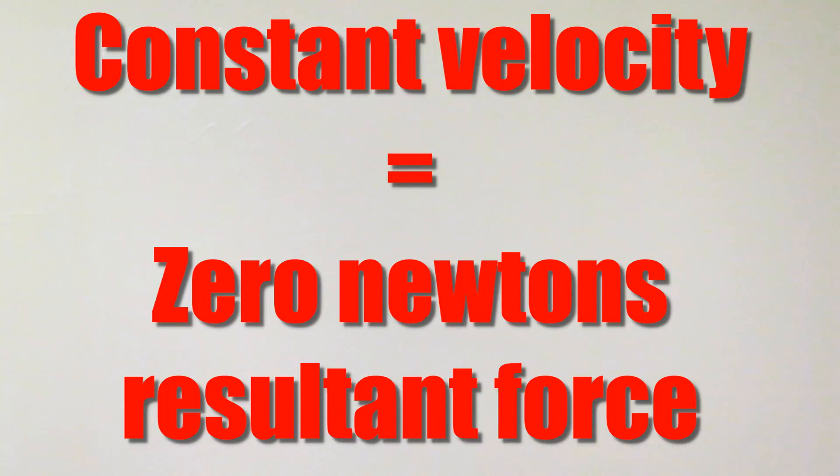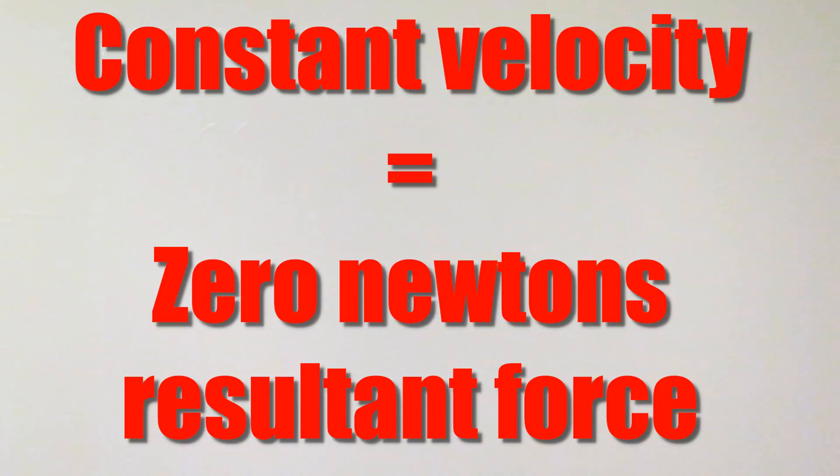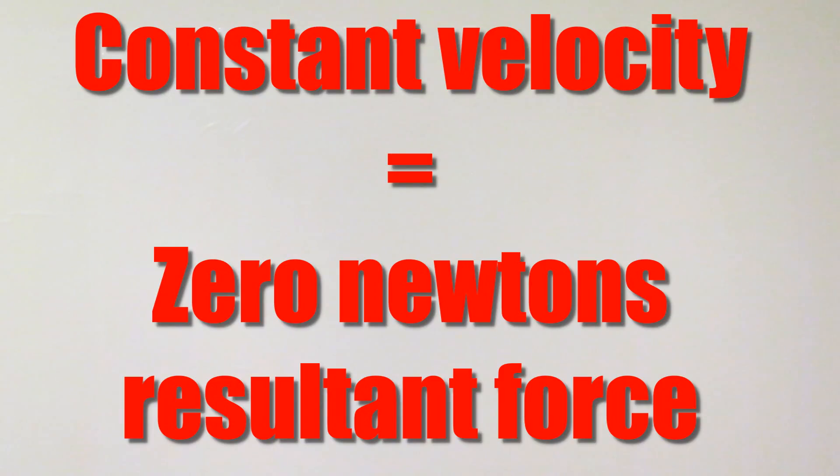Now this might be an object which is stationary or it might be an object which is traveling at a thousand miles an hour. It doesn't make a difference. If that object has a constant velocity, if it's not speeding up and it's not slowing down and it's not changing direction, then overall the resultant force is going to be zero every single time.